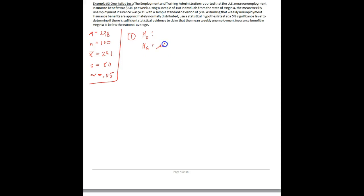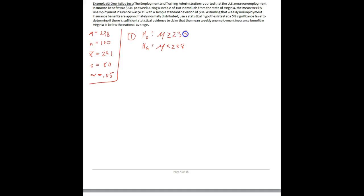So H-A is that mu is below 238 — it's less than what we would generally think. And then conversely, H-naught is just greater than or equal to 238.